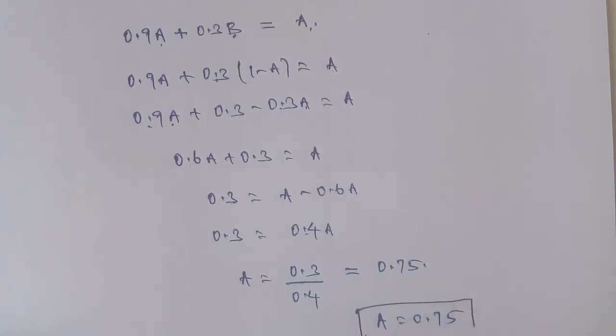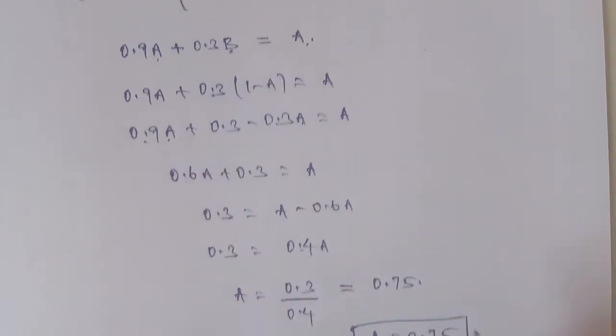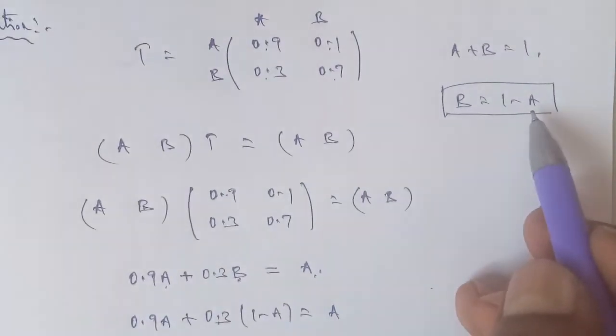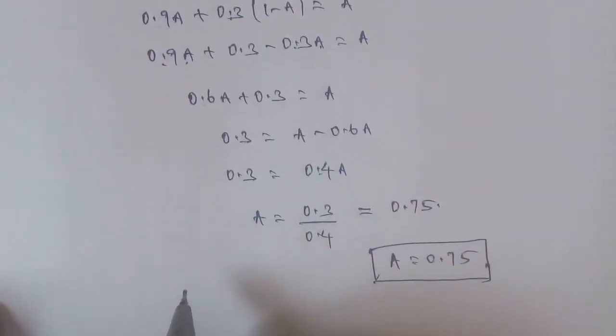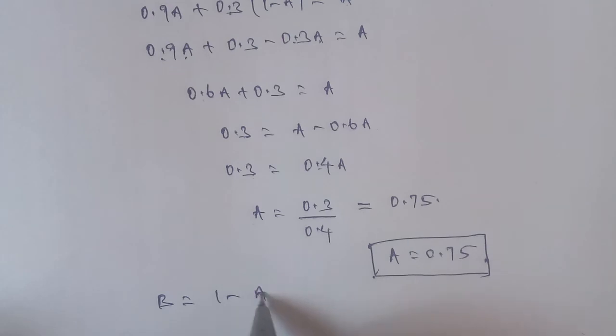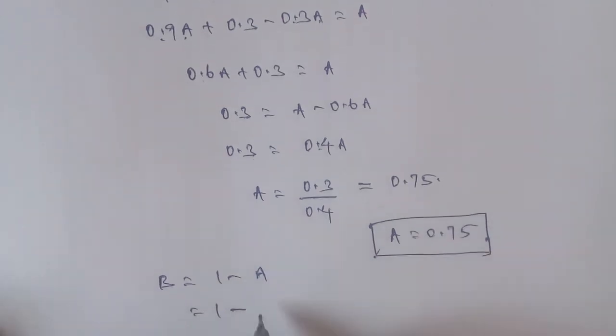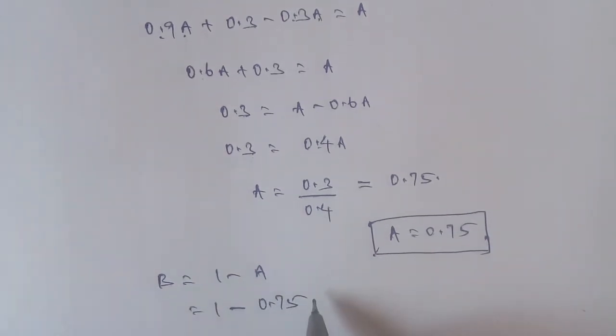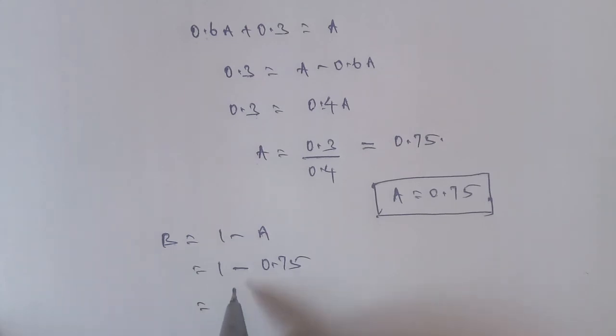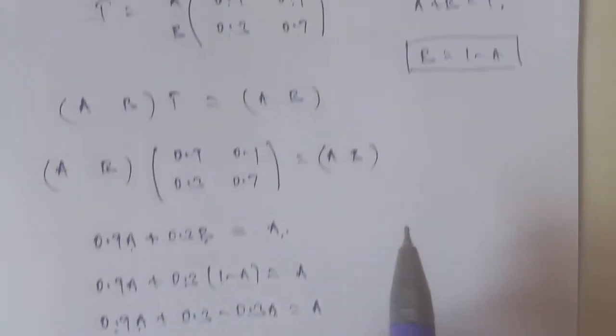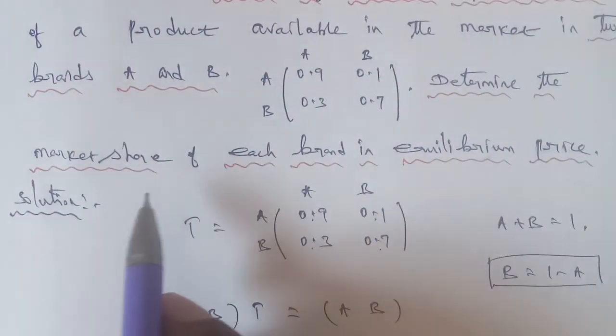B is equal to 1 minus A. If you substitute the answer, B is equal to 1 minus 0.75, so B equals 0.25.